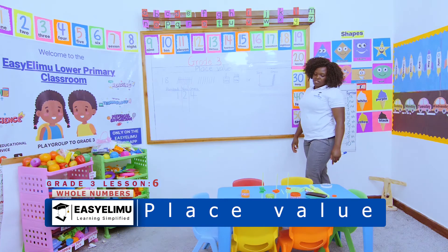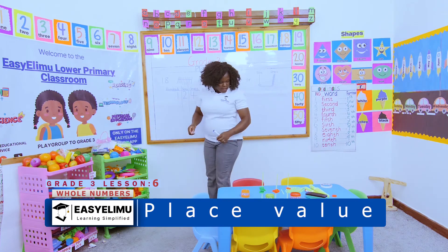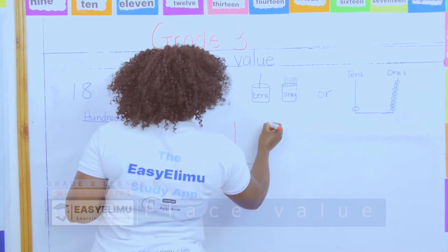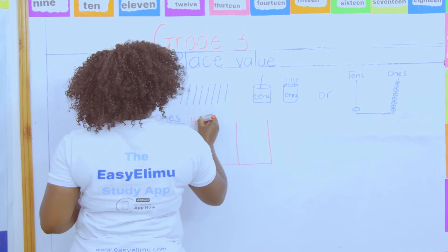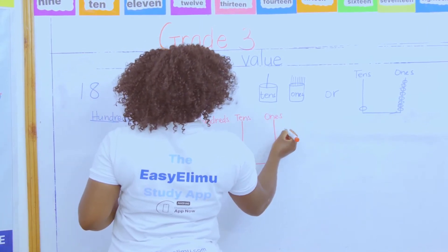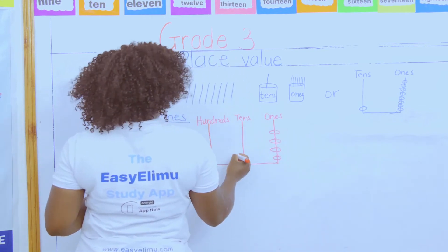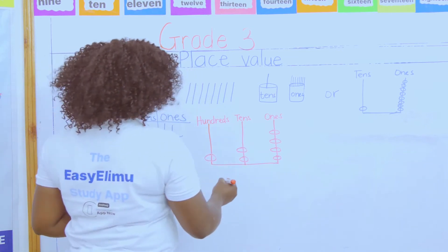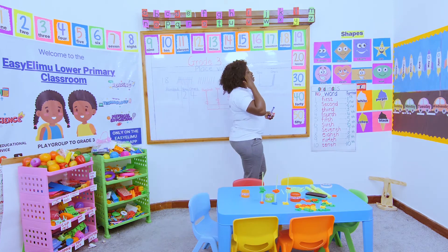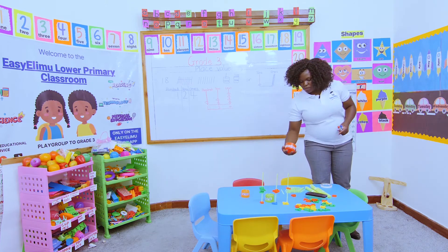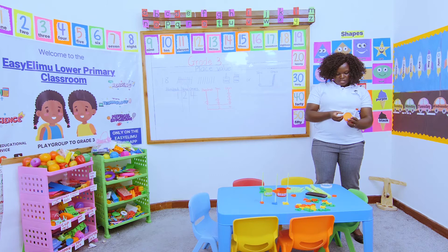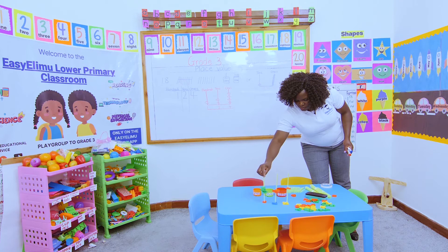If I'm told to use the abacus to represent those numbers, I have already represented them. I have moved to three sections: hundreds, tens, and ones. How many ones? One, two, three, four. How many tens? One, two. How many hundreds? One. To represent the number, four ones, two tens, and one hundred — I can still represent the same number using the place value chart.